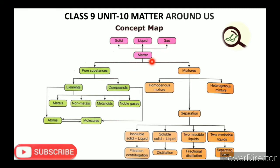From 8th standard, matter is classified by physical state into solid, liquid, and gas — 3 types. In 9th standard, matter is classified by chemical composition into pure substance and impure substance. Impure substances are mixtures, while pure substances include elements and compounds.